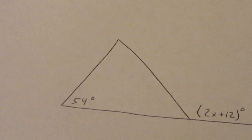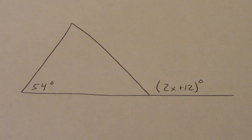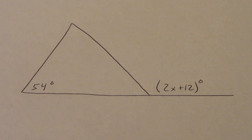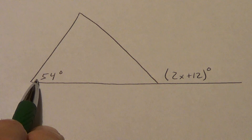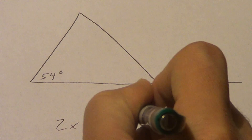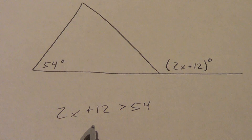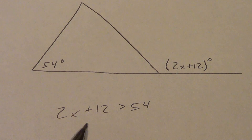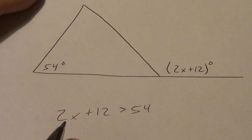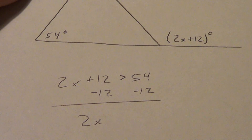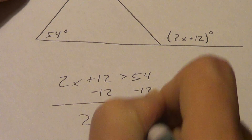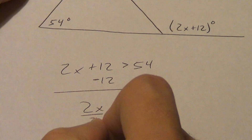Let's look at an algebra problem. Copy this down and try to solve it on your own — pause the video while you're doing this. The exterior angle is greater than an interior angle by itself, so all we know is that 2x plus 12 is greater than 54. We solve these just like regular algebra problems — subtract and divide. Minus 12 and minus 12: I get 2x, keep your greater than sign, and we get 42. Divide by 2, and I get x is greater than 21.